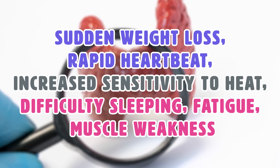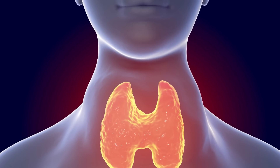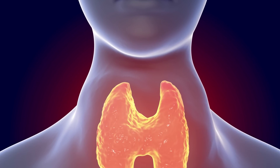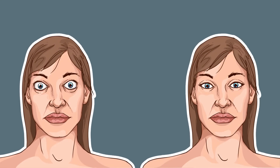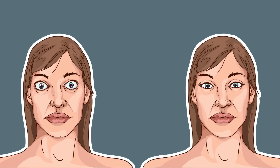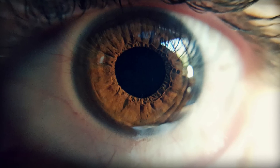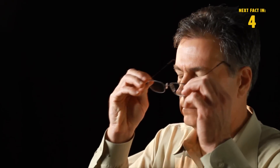A common problem associated with hyperthyroidism is Graves ophthalmopathy, which makes a person's eyeballs protrude beyond their protective orbits. This happens because tissues and muscles behind the eyes swell. Other signs include red or swollen eyes, light sensitivity, blurry or double vision, or excessive tearing and discomfort in one or both eyes.